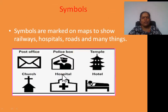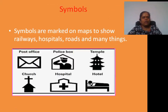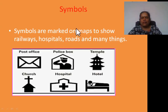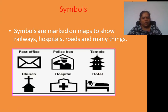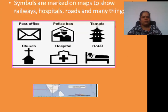Okay students, now: symbols. When you are moving on the road, you can see some symbols. Why are symbols used? Because symbols are used on maps to mark railways, hospitals, roads and many other things. For example, if you see a picture of a post office or a temple on a map, you can understand that there is a temple in that place. Similarly, symbols for a church or a hospital on the roadside help you understand what is located there.